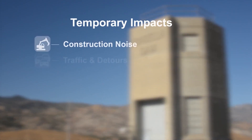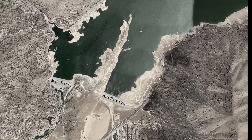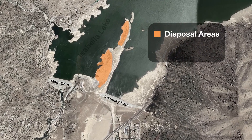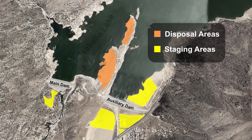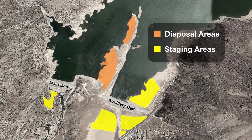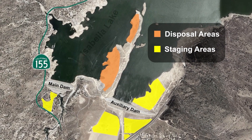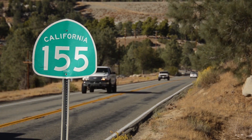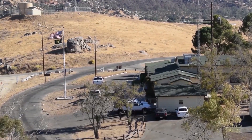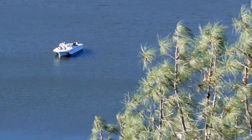With such a large and complex engineering project, there will be some impacts. Visitors should expect some construction noise near the project area, as well as minor traffic delays and detours. While highway relocations are no longer in the plan, the Corps will be completing significant work near Highway 155 at the main dam, and temporary traffic safety measures will be in place.